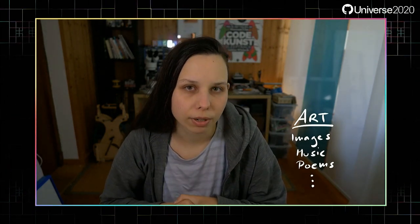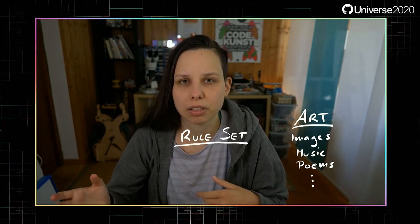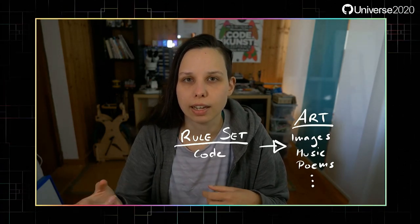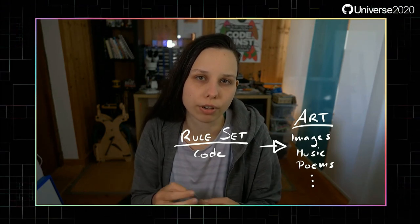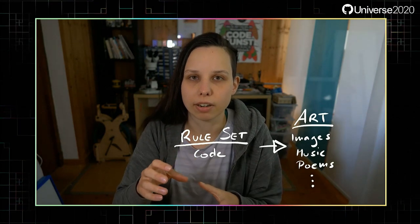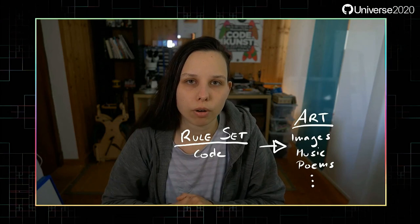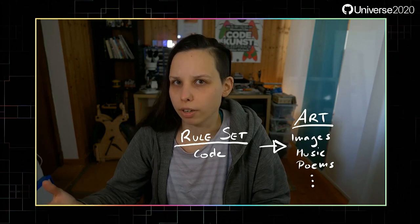When we talk about generative art we always use some sort of rule set to make our art. This rule set in our case will be created by code, by an algorithm that we write. But this doesn't need to be the case all the time. Some people work with dice in the physical world to generate random numbers, then apply their rule set and draw certain shapes. But we will go with code, and that's what you usually think of when you hear generative art today.